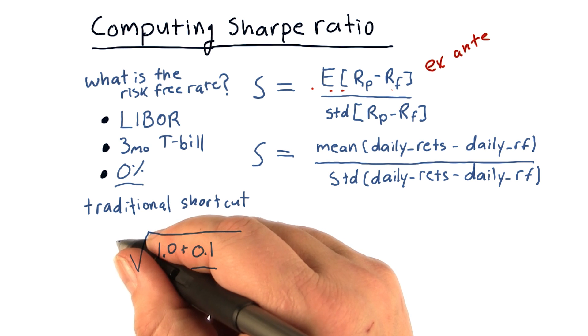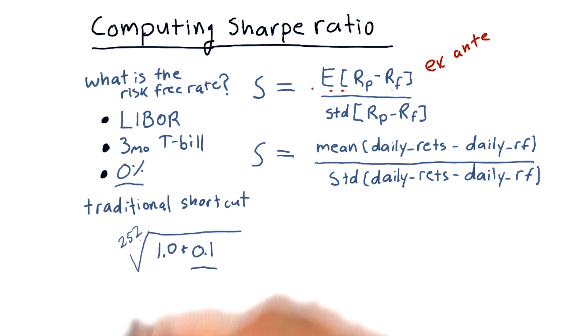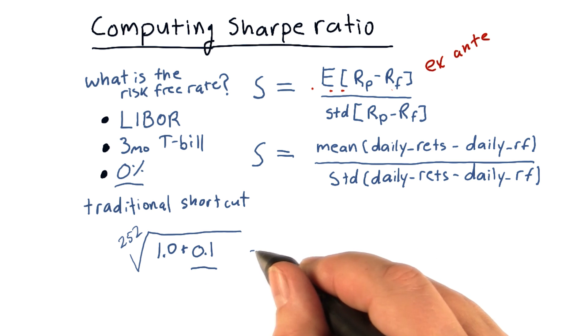We take the 252nd root of that sum, believe it or not. That's pretty easy to do in Python actually. And subtract 1. And that is our daily risk-free rate.